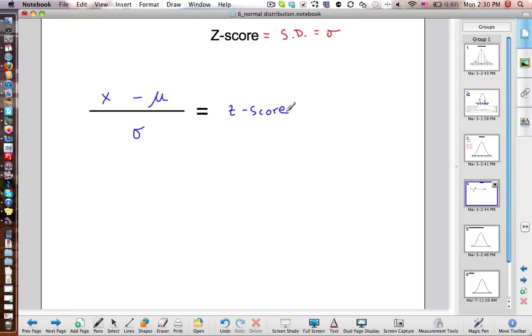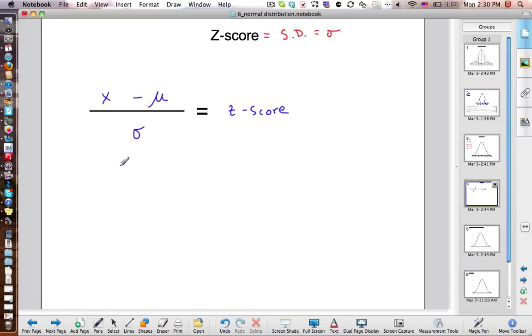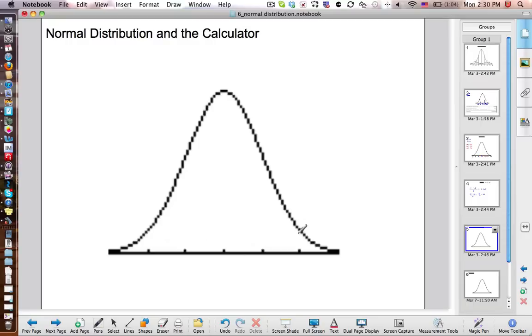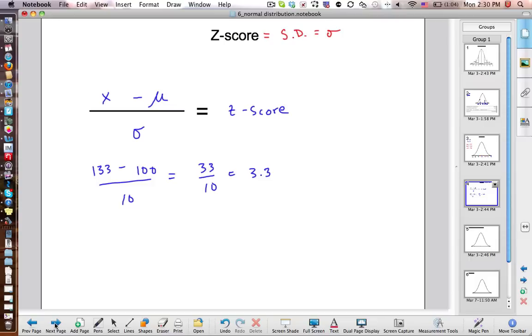So let's actually write this out. Say we have our value, x, minus our mean, divide the standard deviation, and that gives us our Z score. Z score is how many standard deviations our data point, or our question, is above the mean. Again, so let's do an example. If we have 133 minus the mean, which is 100, over the standard deviation, which is 10. So that's 33 over 10, which is 3.3 standard deviations above the mean, which would be right here.